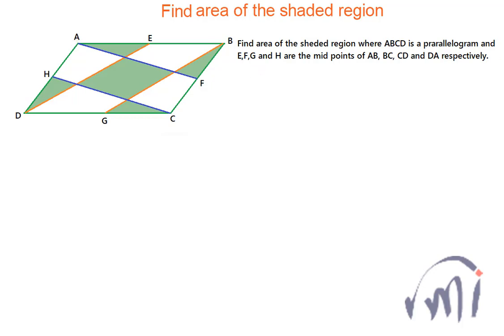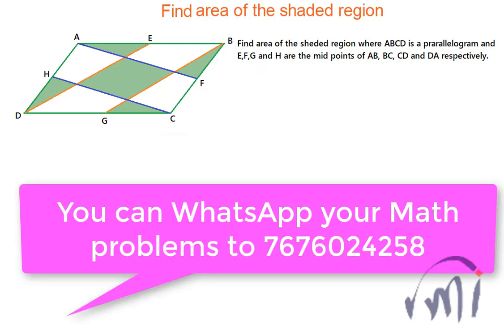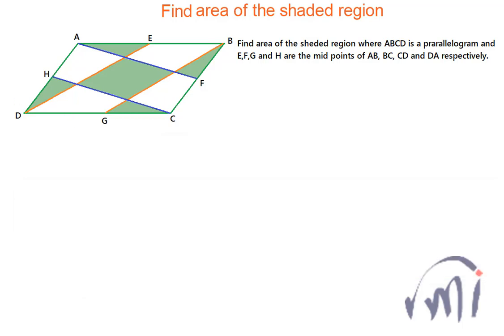If any of you also have a problem for which you need a solution, you can send your problem to the number shown below. I'll try to solve it and if it is worth making a video, I'll make a video for that problem. So ABCD is a parallelogram and this is a problem where we have to find the area of the shaded region.